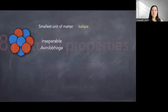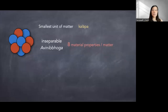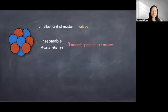Avini-boga is the inseparable — it consists of eight types of material properties and forms the smallest unit of mata, which is called a kalapa. When we say inseparable, if you look at this graphic, it might be a little bit misleading because you see eight things stuck together. Actually, these eight little balls just convey the idea that there are eight types of material properties in this kalapa — they are not separated, they are together. These eight are not separable because they always arise together, always pass away together, and any kind of mata must consist of these eight, however small it is.